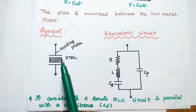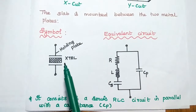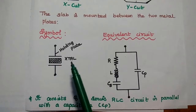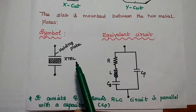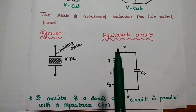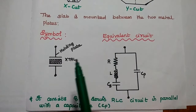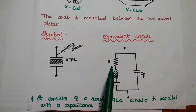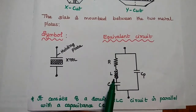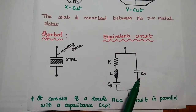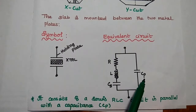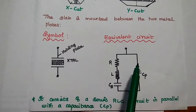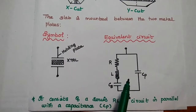This is the symbol of the crystal — the rectangular slab is placed in between the holding plates. The crystal can be represented with the term X-stall. The equivalent circuit of this crystal consists of a series RLC circuit in parallel with capacitance CP. It can be used as an RLC tuned circuit.